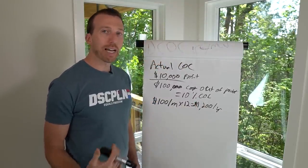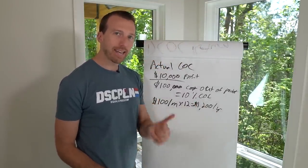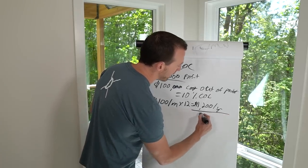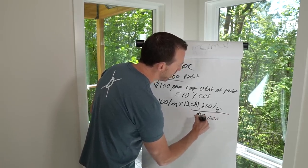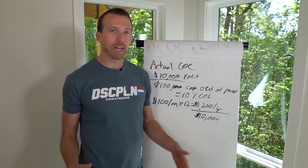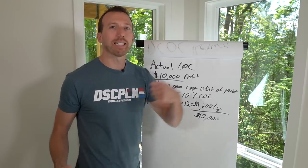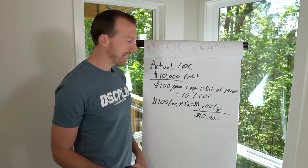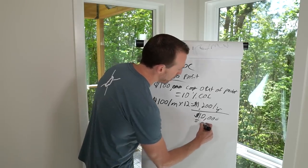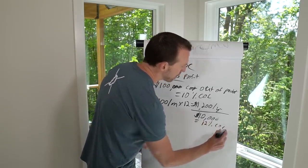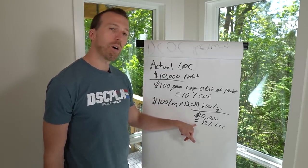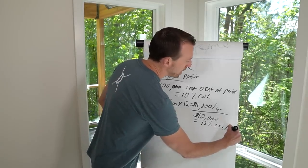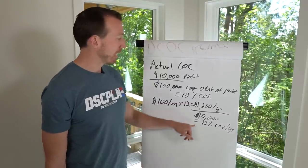Let's say you invested a down payment of $10,000 into this rental. Your annual cash flow is $1,200. Your out-of-pocket cost — the down payment — is $10,000. $1,200 divided by $10,000 equals 12% cash on cash return. That means your $10,000 is earning you 12% cash on cash annually. That's a pretty good deal. And 10% on a flip, I would argue, is not that great of a deal — but you still earned some money.